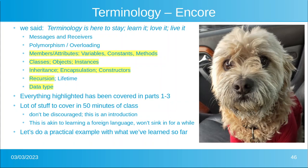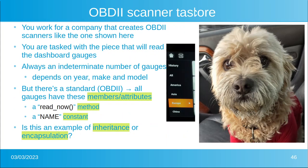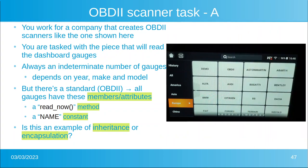What we're going to do is create an example with the stuff that we've learned. Suppose that you work for a company that creates onboard diagnostic scanners like the one shown in the picture. You're a programmer tasked to create an object, a routine that will read the dashboard gauges of customers. You don't know the year, the make, and the model because your scanner is supposed to read from any car.